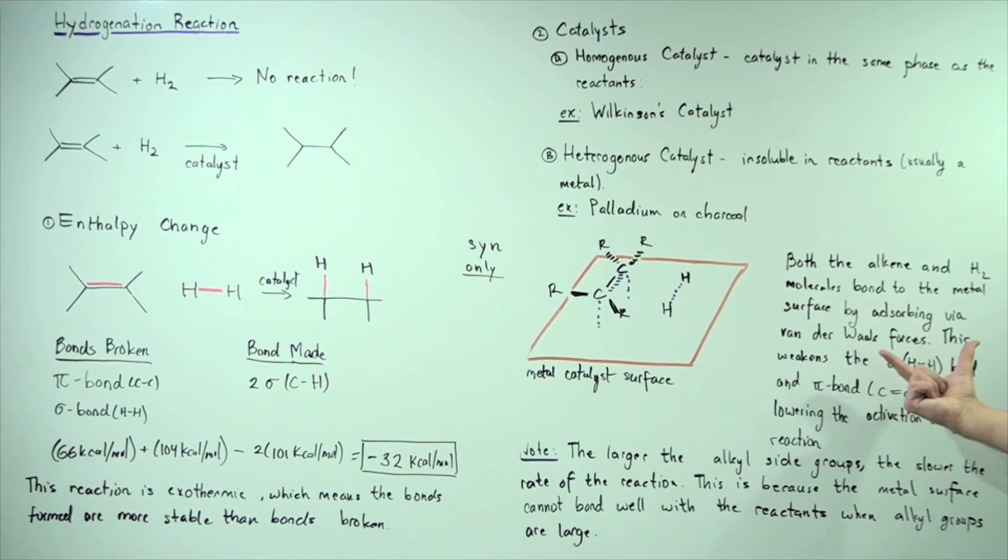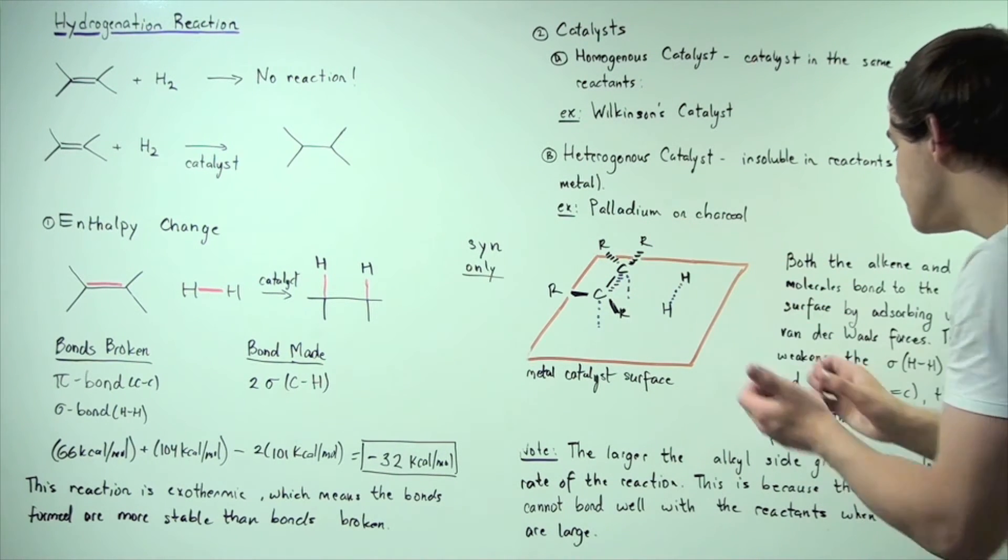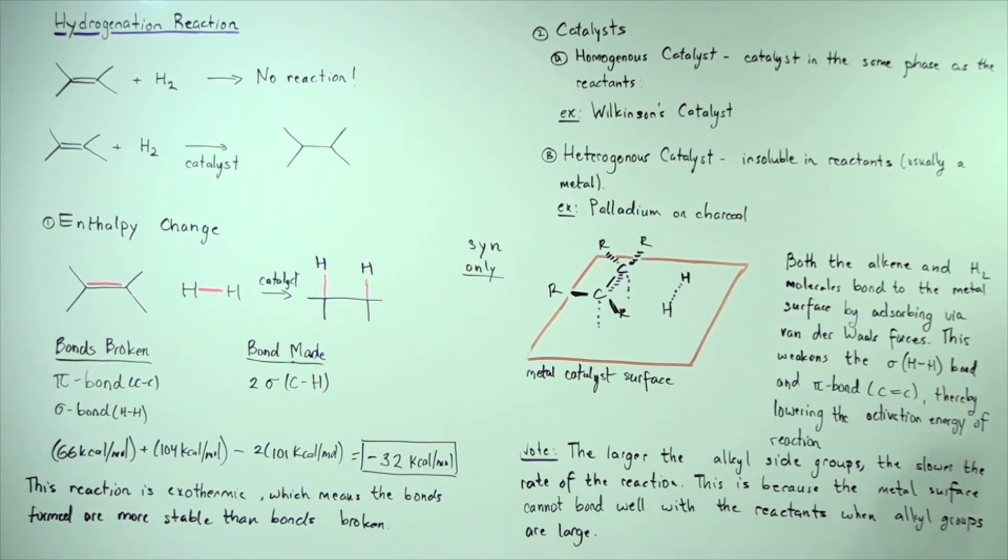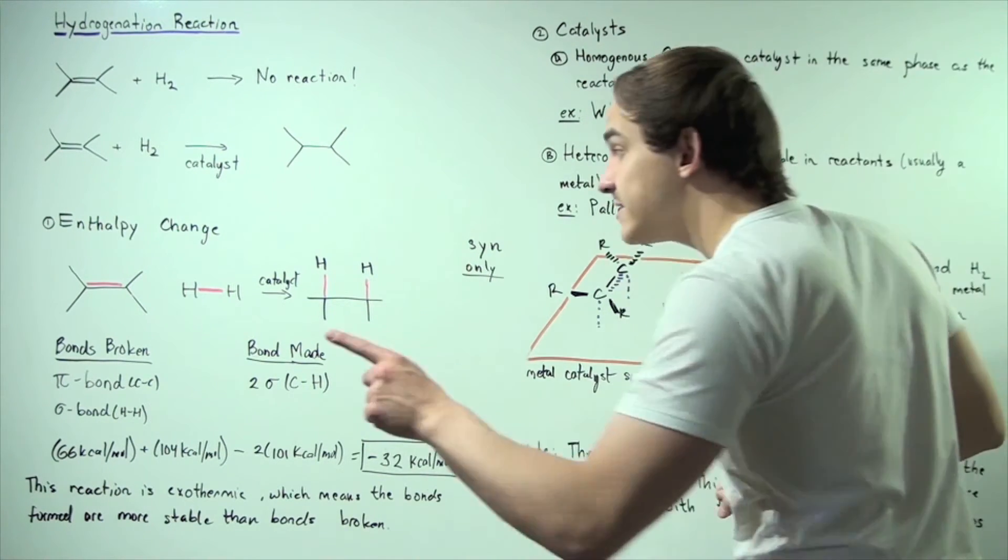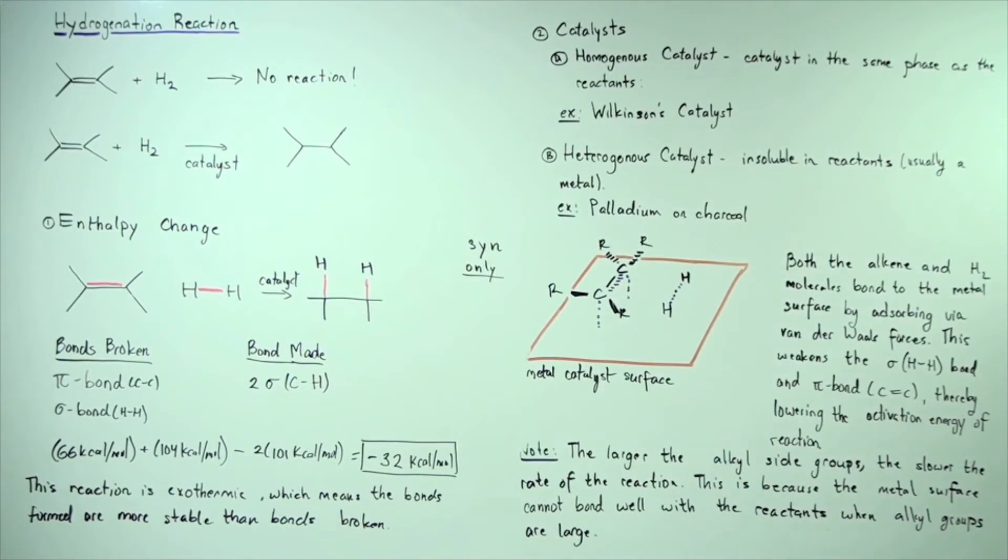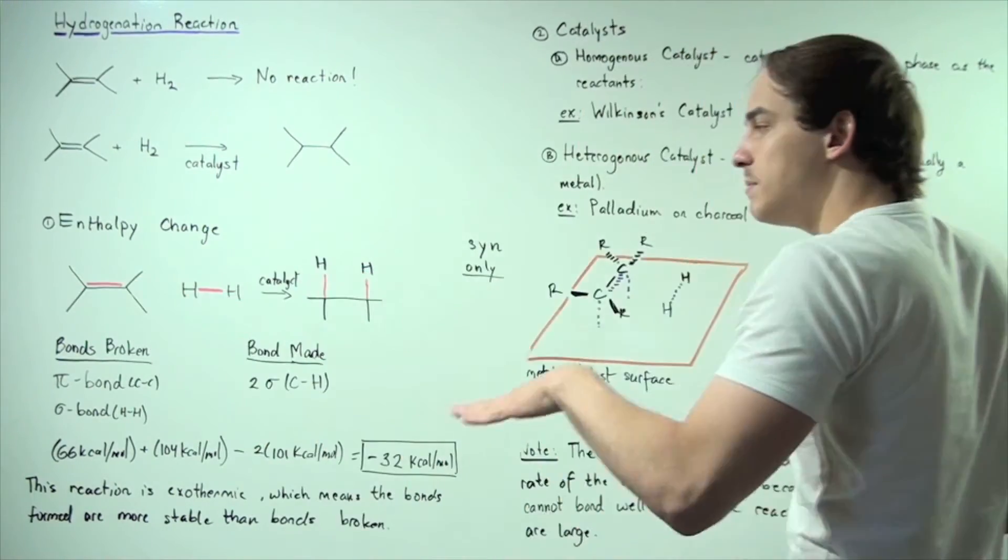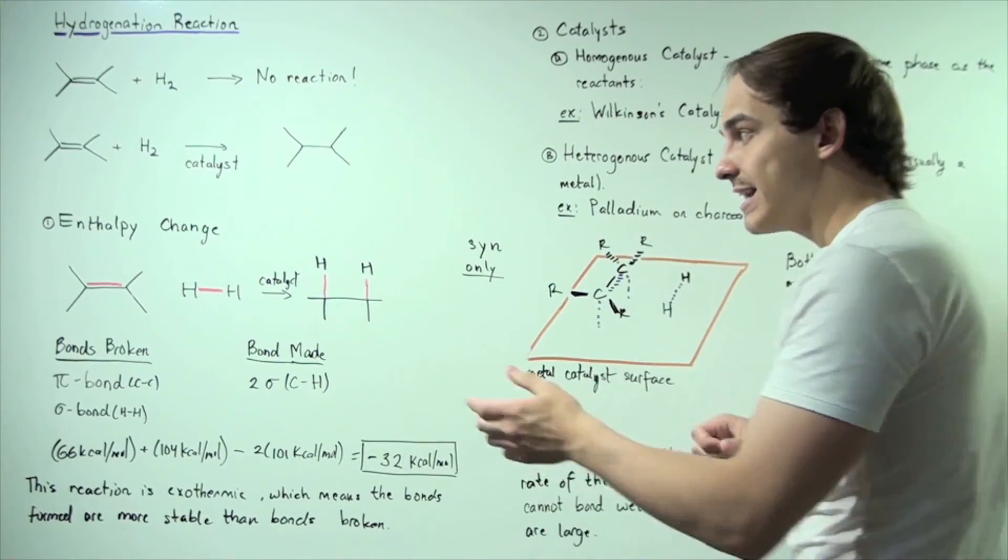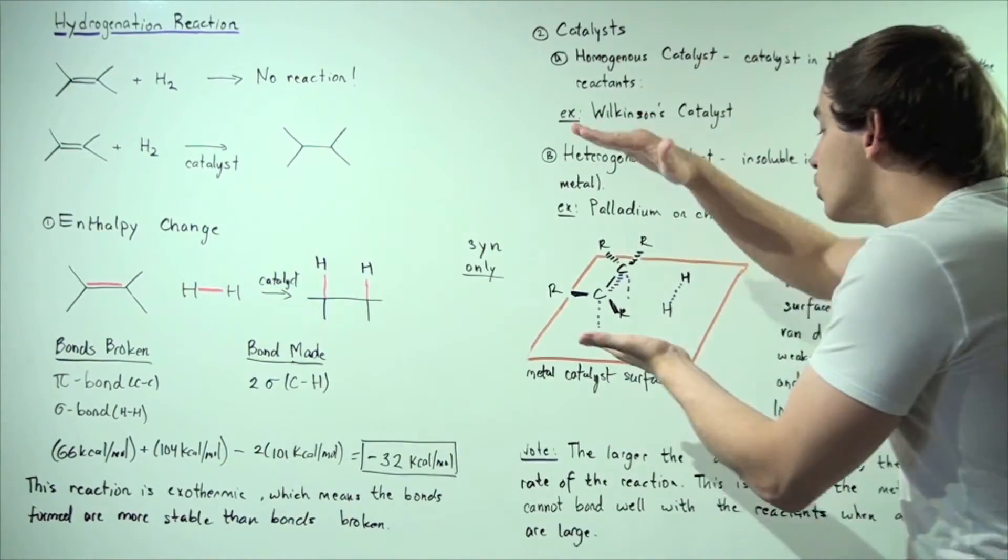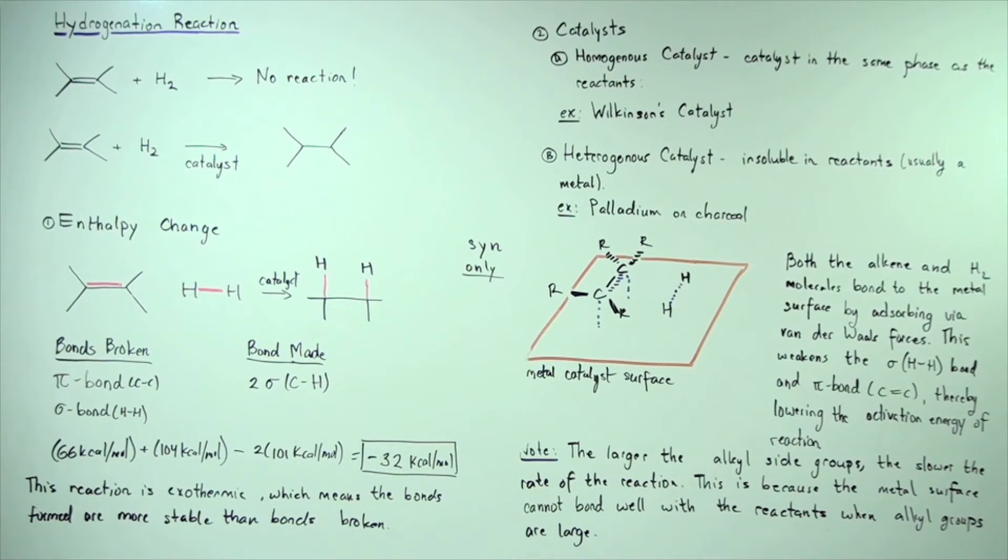Van der Waal forces are simply the instantaneous dipole moments created in these two molecules. Now, this weakens the sigma-HH bond that needs to be broken as well as the pi bond in the double bond that also needs to be broken. By weakening these two bonds, we lower the activation energy of our reaction. So that's exactly what happens in our heterogeneous catalyst.